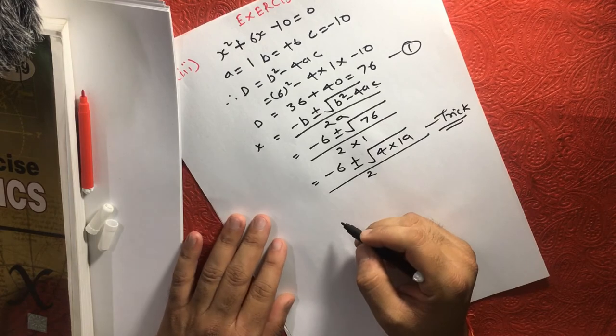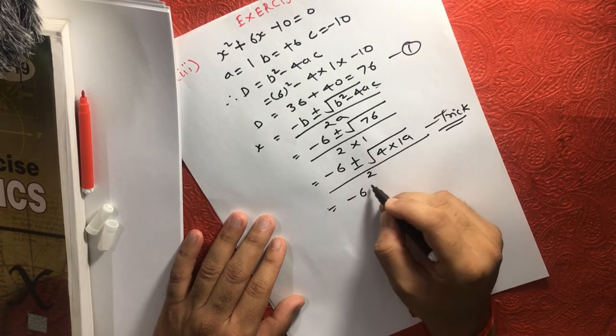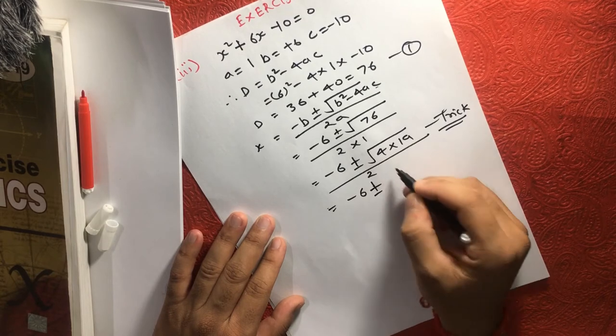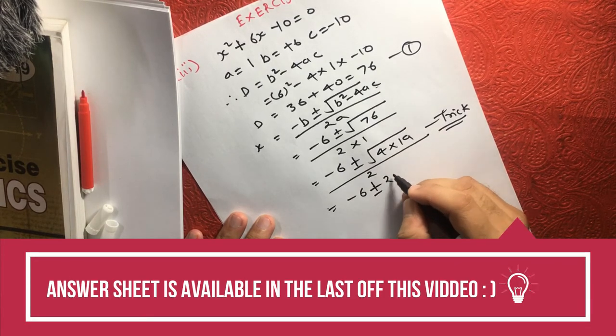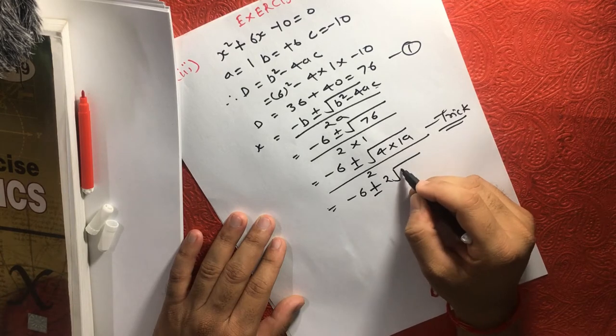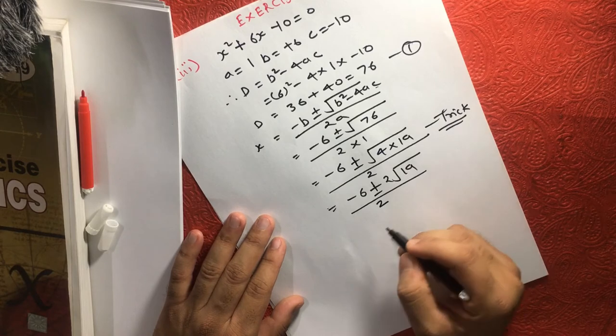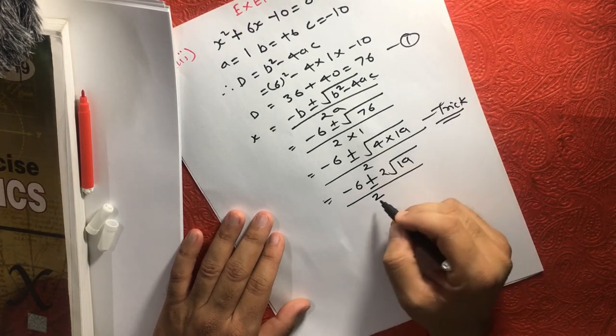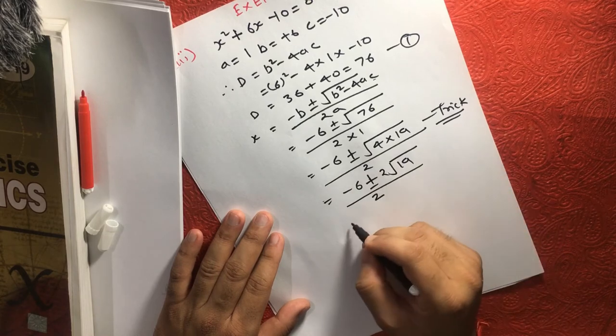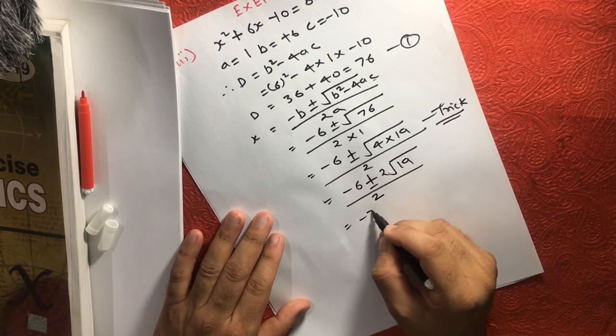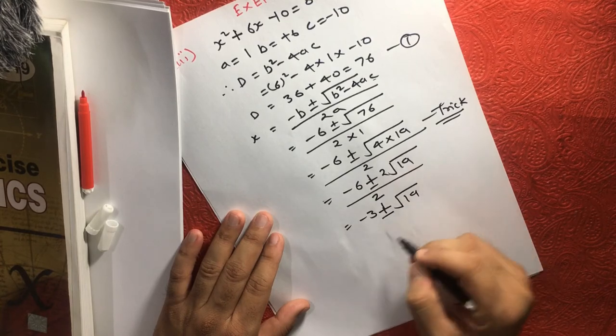Over 2. You can write as minus 6 plus minus 2, since square root of 4 is 2, times square root of 19, over 2. Now if we divide this equation by 2, this will become minus 3 plus minus square root of 19.